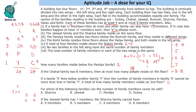For which of the following families can the number of family members never be odd? The right wing always has even numbers — four, six, six, eight. Pandya is on the left wing, so looking at fixed right-wing families: the Dube family will never have an odd number. If the Jayaswal family has seven members, what number of members can the Sharma family not have? Since Jayaswal is on one side and Sharma is on the other, Sharma cannot have five members. The answer is five.